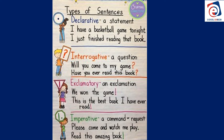Number four: an imperative sentence is a command or a request — we're telling someone to do something. For example: 'Please come and watch me play' or 'Read this amazing book.' We're not asking — 'Will you come and watch me play?' is a question — but an imperative is telling them: 'Please come and watch me play.' The imperative sentence ends with a period if it is a mild command, or with an exclamation mark if it is a strong command.